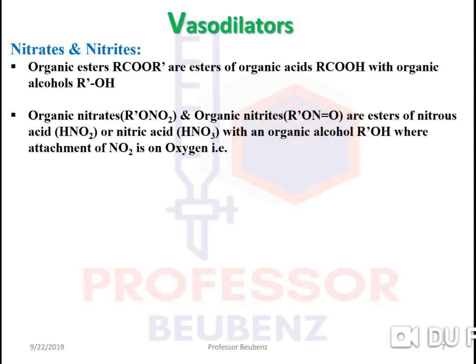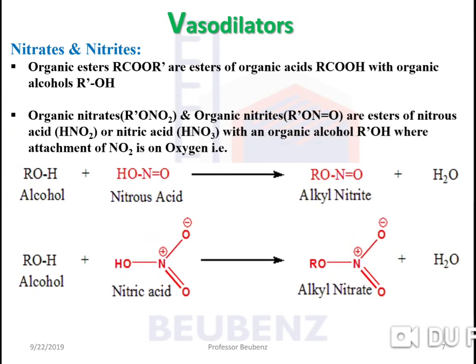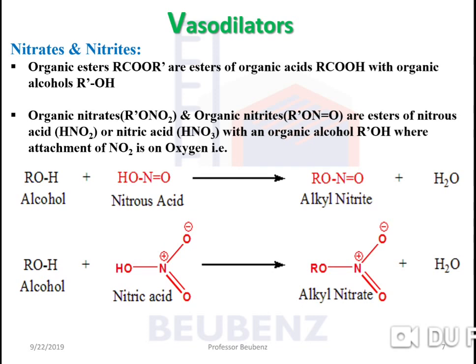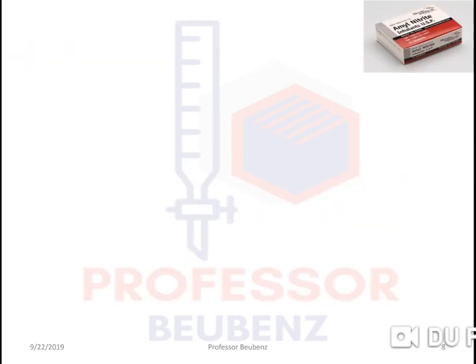Here you get the exact idea of nitrates and nitrites. Alcohol reacting with nitrous acid forms alkyl nitrite (RONO). If you talk about alkyl nitrate, it is a derivative of nitric acid (HNO₃), so alkyl nitrate is RONO₂.